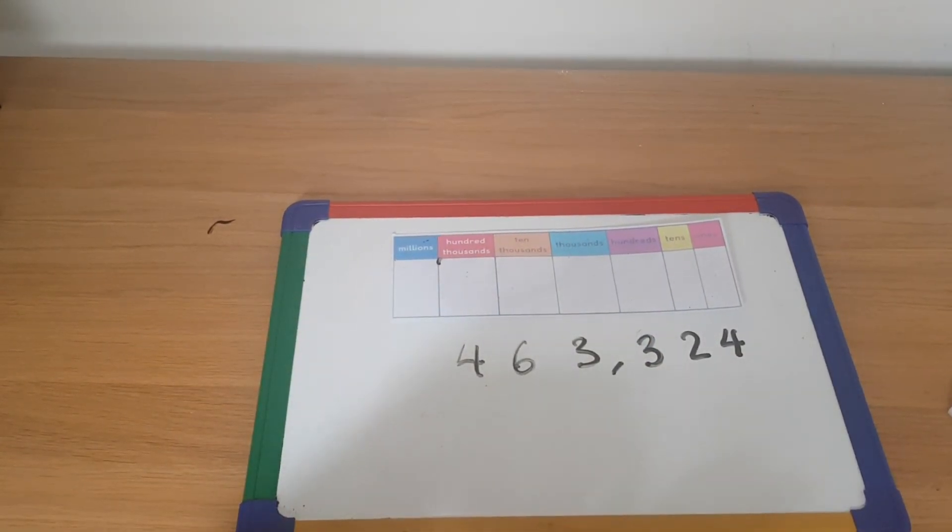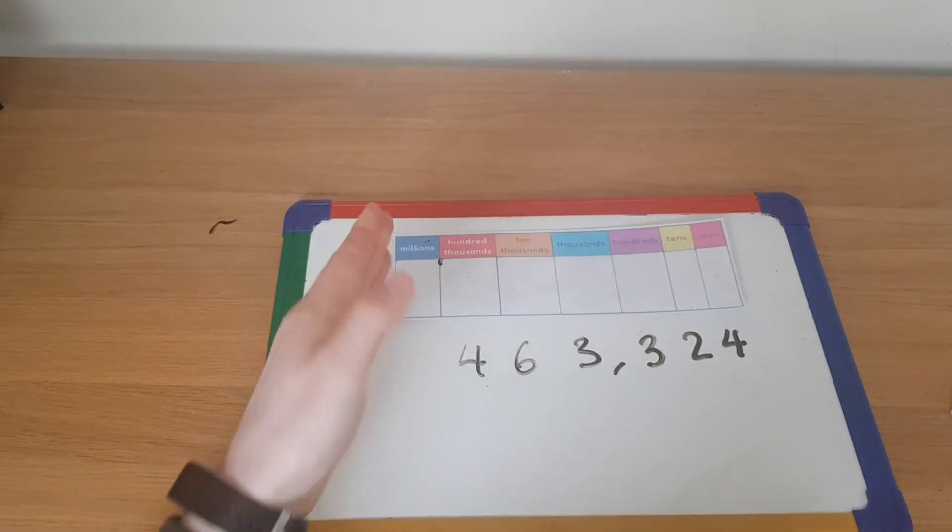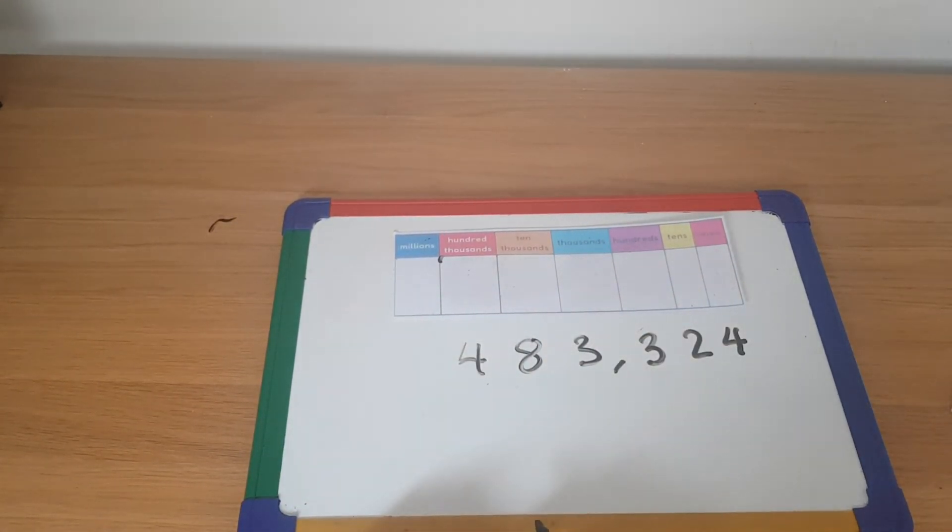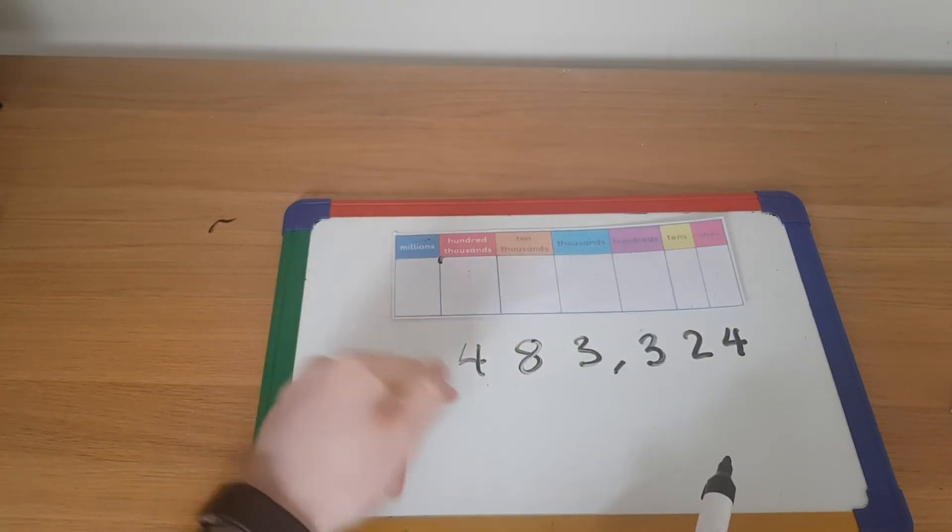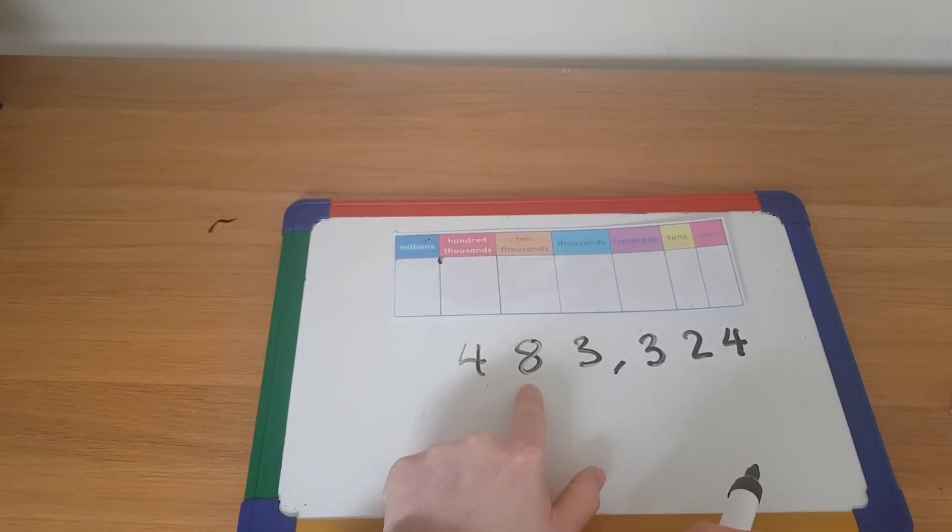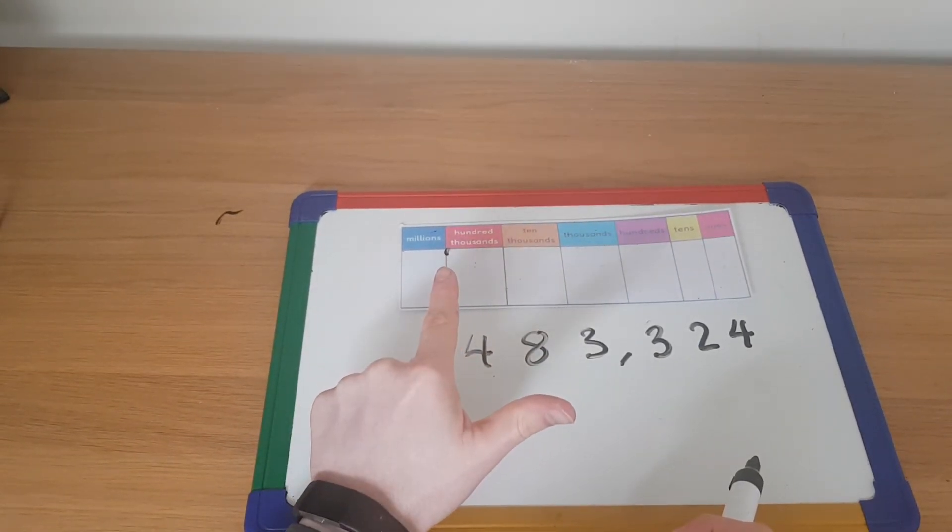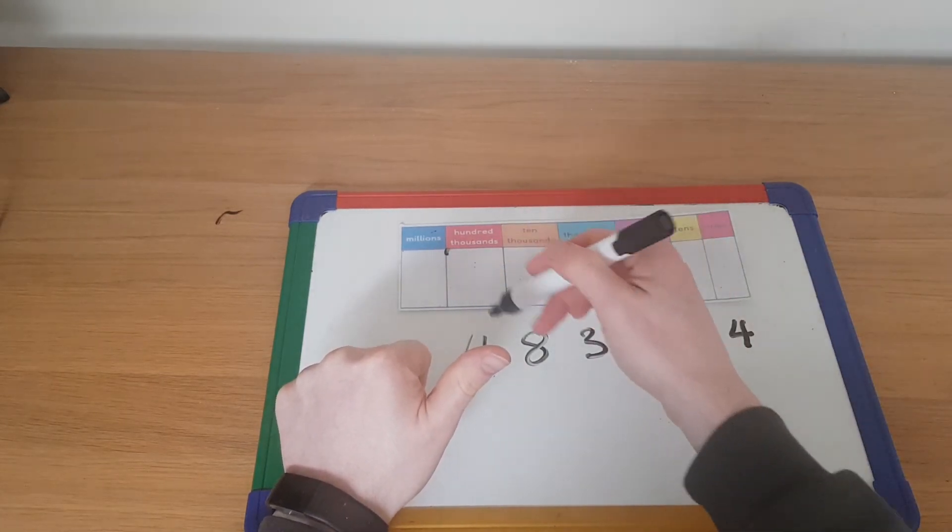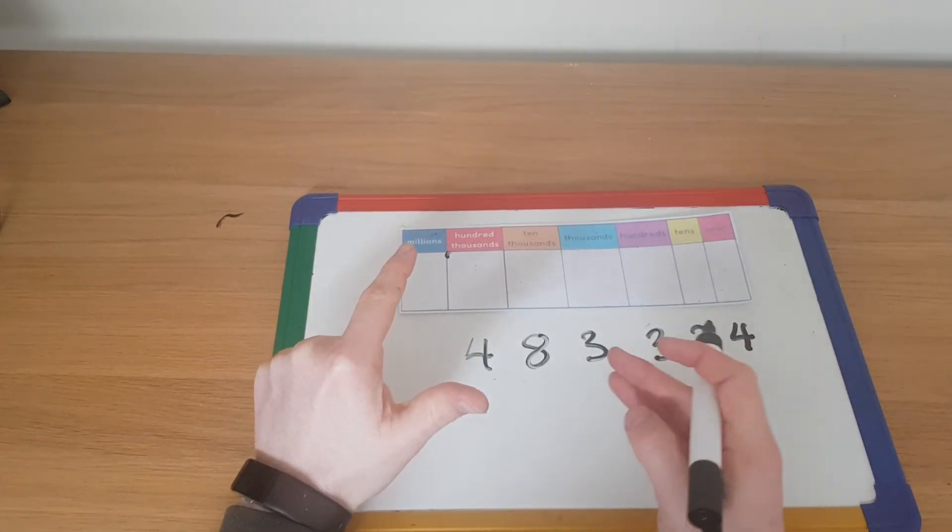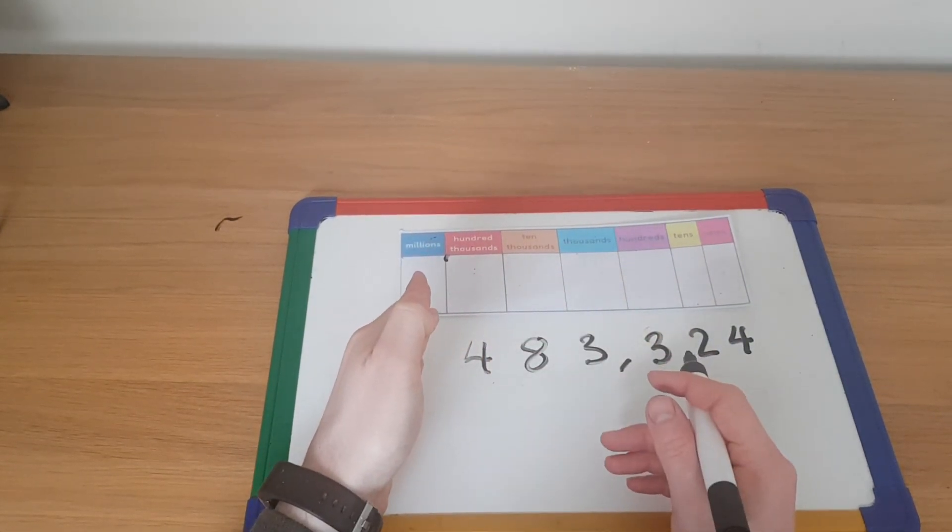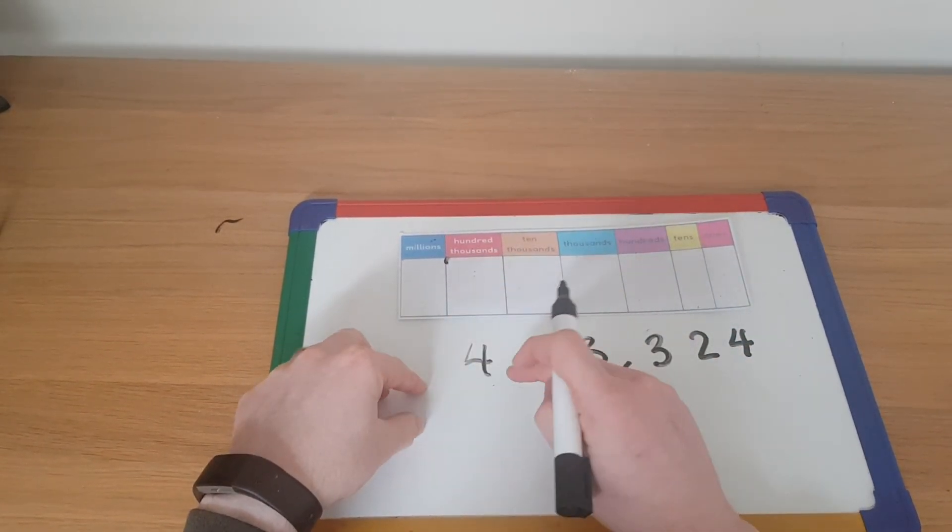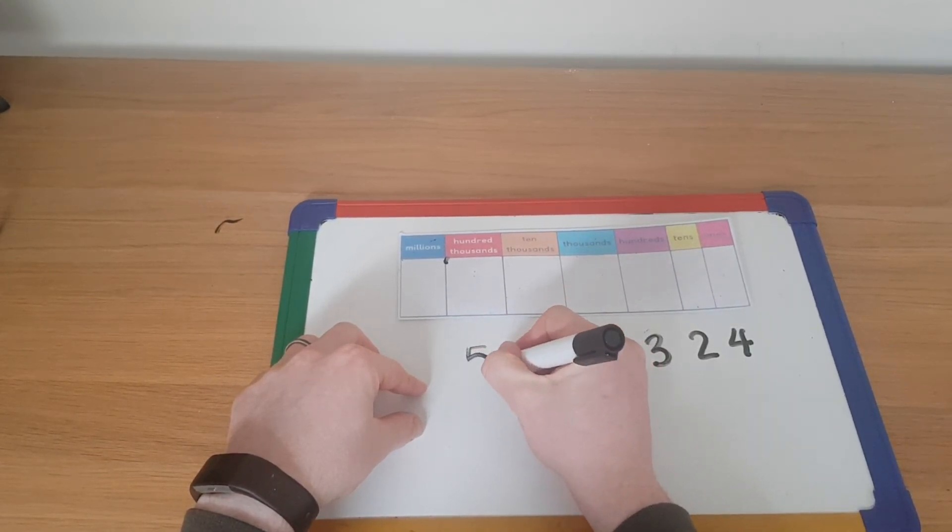What about if I asked you then to add two ten thousands? So you should have looked at your ten thousands column. I had six, seven, eight. So now I've got eight ten thousands. What would happen then if I asked you to add two more ten thousands? So let's have a look. We've got eight to add two more would be nine and ten. Ten ten thousands. But we've just realized that nine is the maximum you could have in that column.